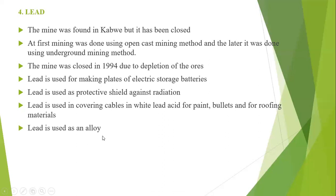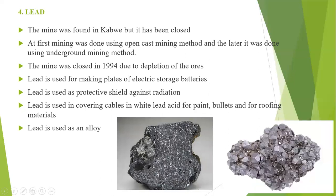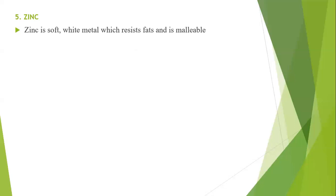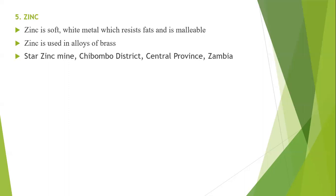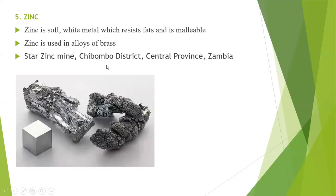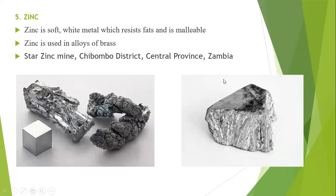Lead is also used as an alloy. Zinc is a soft white metal which resists corrosion and is malleable. Zinc is used in alloys of brass. An example of a place where you find zinc mines is in Kabwe district, Central Province of Zambia, where you can find large quantities of zinc in the earth's crust.